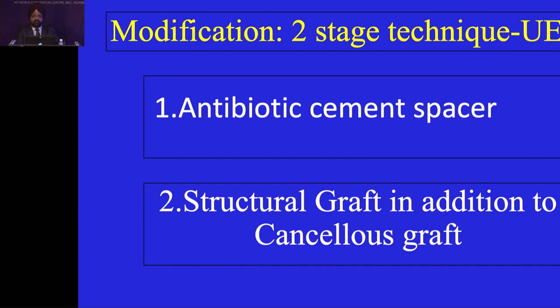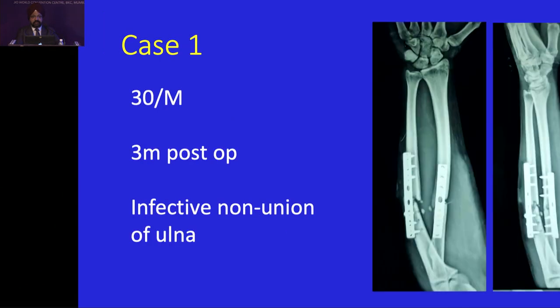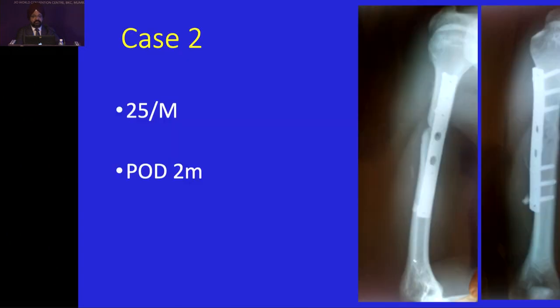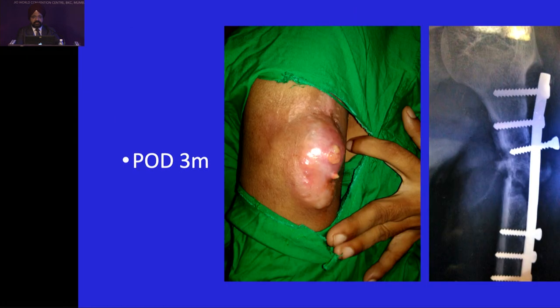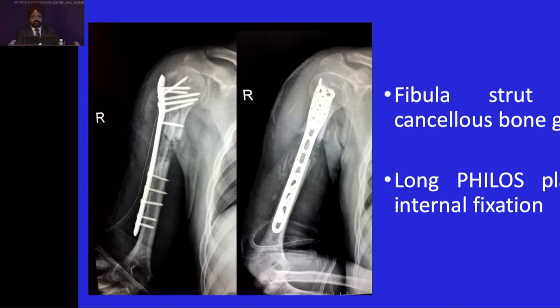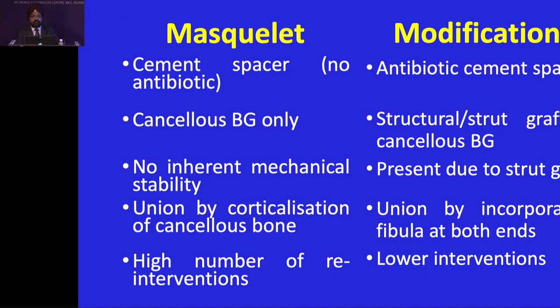In our modifications, we have used a two-stage technique. In a small series of cases done in upper extremity, we added antibiotic to the cement spacer and added structural graft in addition to cancellous graft. Case one: three months post-surgery, infective nonunion of ulna with a centimeter bone gap — the cement spacer was inserted. Case two: two months post-surgery, infective nonunion humerus with a three centimeter bone gap. Antibiotic cement spacer inserted, fibula stud with cancellous bone grafting was done and a long plate applied. There was union by incorporating fibula at both ends and good results with lower interventions.